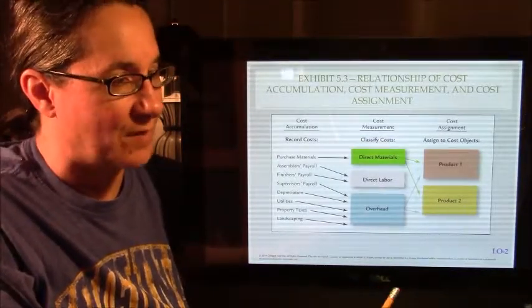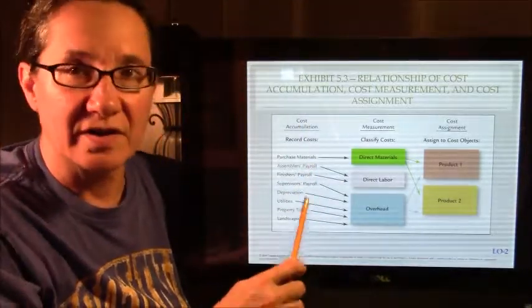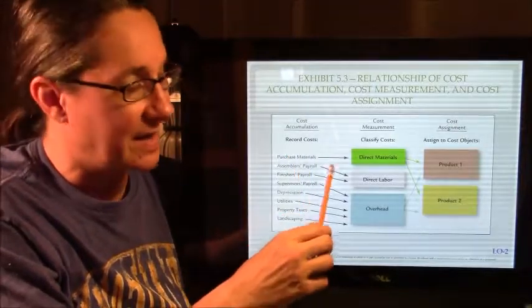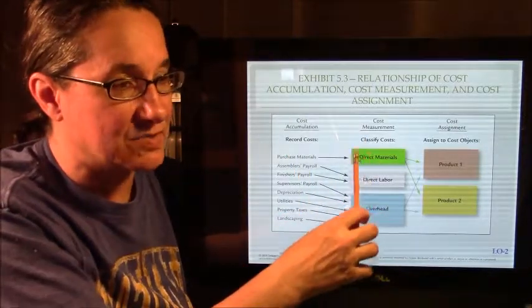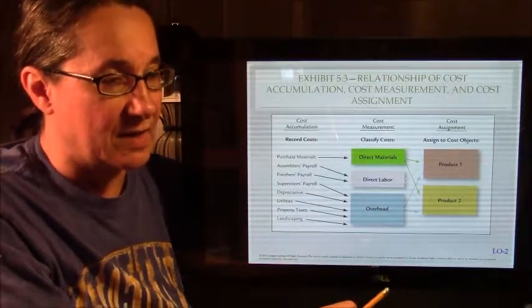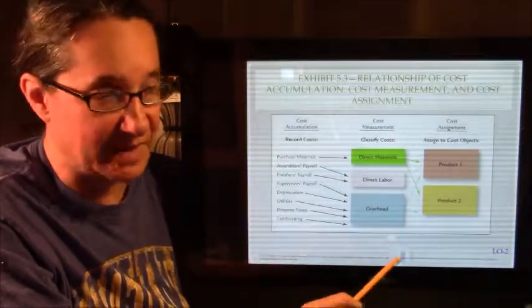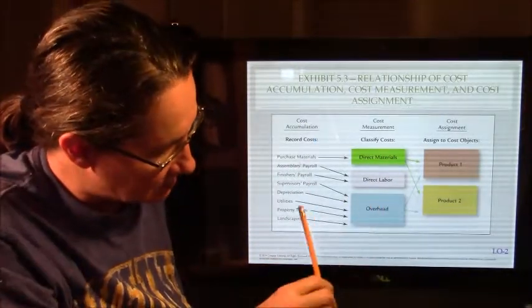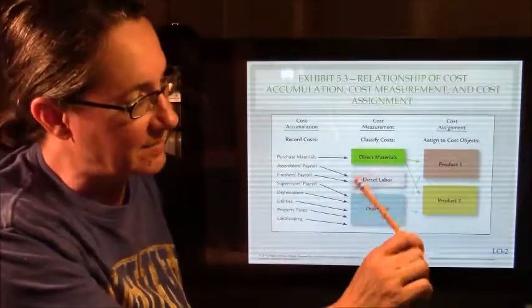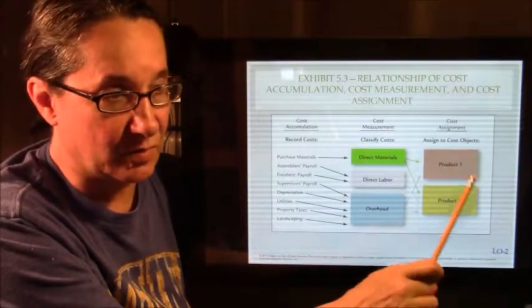So what happens? Well, we record costs using accounting. We record our costs as they come along. And we measure them and classify them as direct material, direct labor and overhead. And maybe not overhead, maybe some selling and admin expenses. But things are happening. We're classifying our costs.